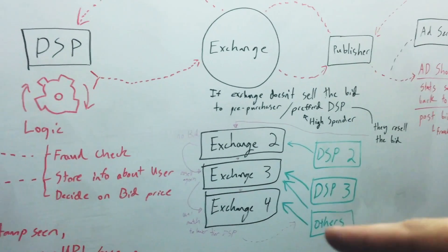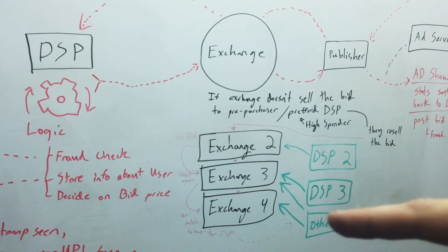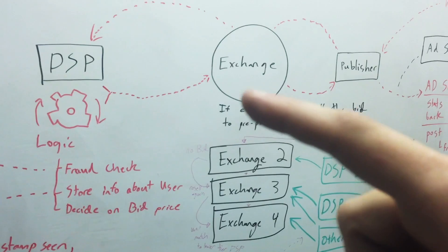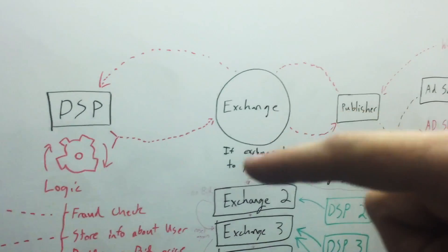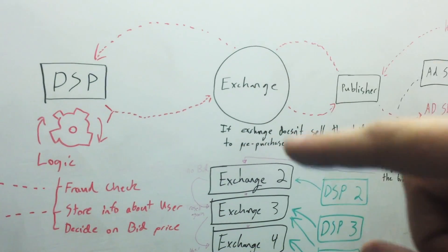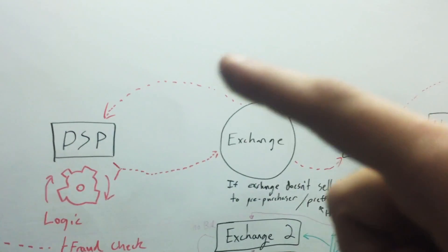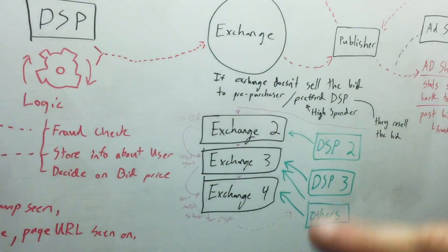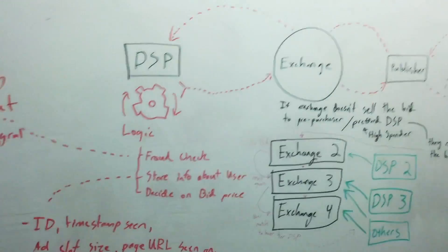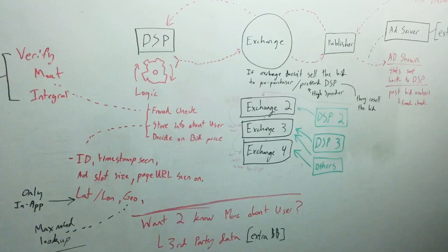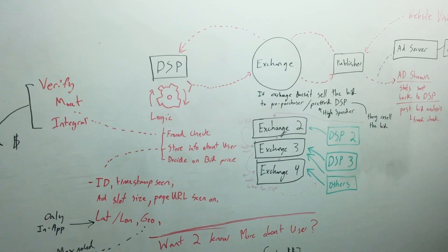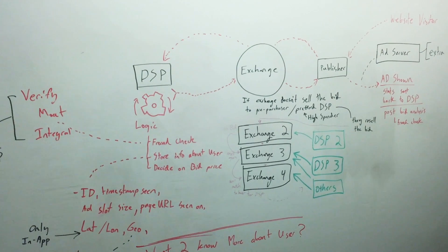You get aggregators like maybe like a BidSwitch exchange in here, which basically aggregates exchanges, takes 12% or whatever the heck their percentage is on top of their percentage if there was an exchange up here. And then they go sell them to DSPs and do the waterfall again. Most of the time it's like tier-three pages, really bad stuff, and it's just crazy how it gets like this.